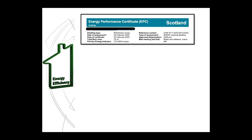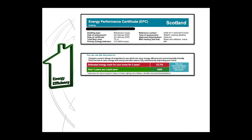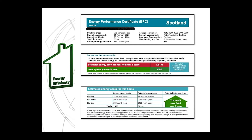Next on the front page of the EPC are the estimated energy costs of the dwelling in pounds, as well as the estimate of money which could be saved if the recommendations listed later in the report are carried out. This is then split down into further detail, including broken-down costs on the third page of the EPC.